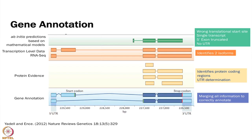The predictive model does not have the right transcriptional start site, it only has one transcript, it does not have the 5-prime exon, and it does not have the UTRs — so it is missing a lot of information. If we add in RNA-seq data we find at least two isoforms. But when we add in proteomics, we figure out what is actually making it to the protein level — we can find where the start codon is and better understand where the UTRs are. Merging all this information is really necessary to correctly annotate genomes.